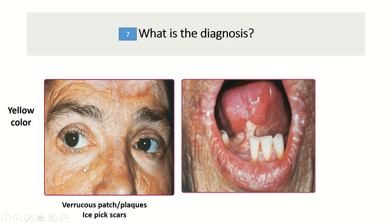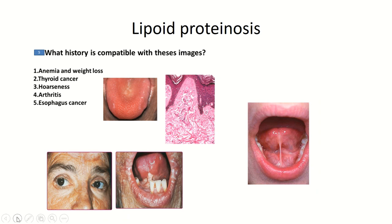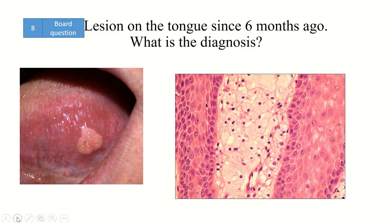What's the diagnosis? As you see here, there are waxy patches and plaques with ice pick scars, and beaded papules alongside the palpebral rim, along with oral findings. This image is also indicative of lipoid proteinosis.